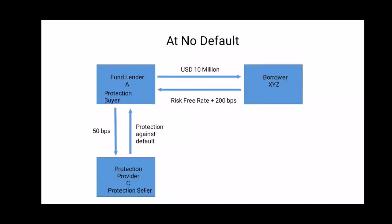In the first case, when there is no default — suppose the bond issuer XYZ does not default — the fund house A will get back its invested money from issuer XYZ itself, and the protection provider does not have to pay any amount to the fund house A.